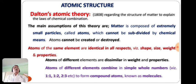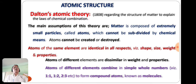But atoms of different elements are dissimilar in weight and properties. Atoms of different elements combine in simple whole numbers like 1:1, 1:2, 2:1, 2:3, etc., to form compound atoms known as molecules. For example, HCl (hydrochloric acid) is an example of 1:1 combination, and water molecule is an example of 2:1 combination. These are the important assumptions of Dalton's atomic theory.